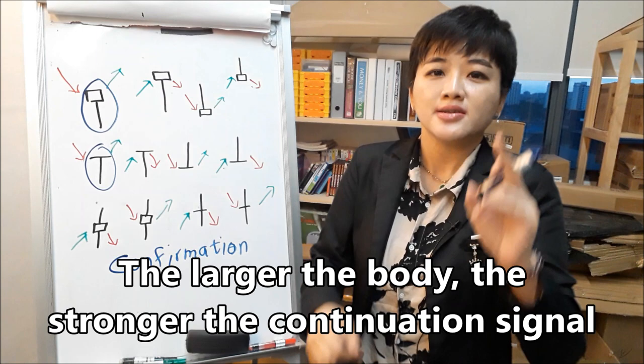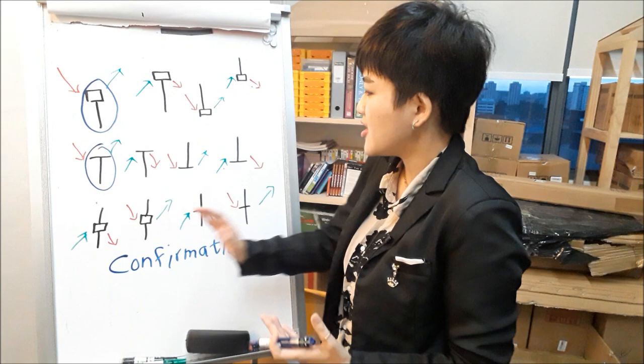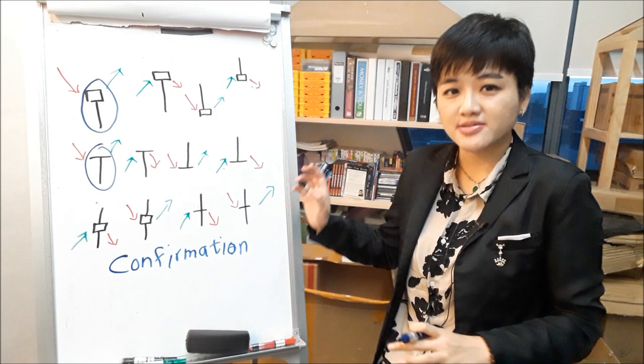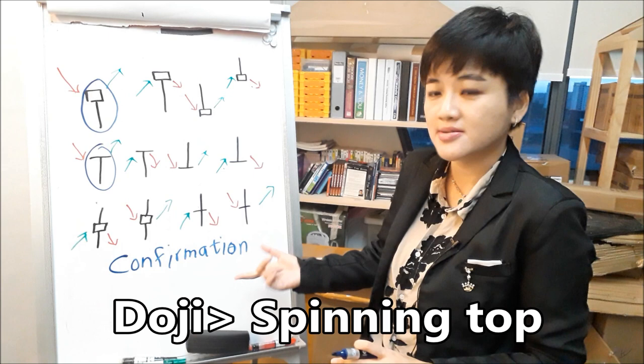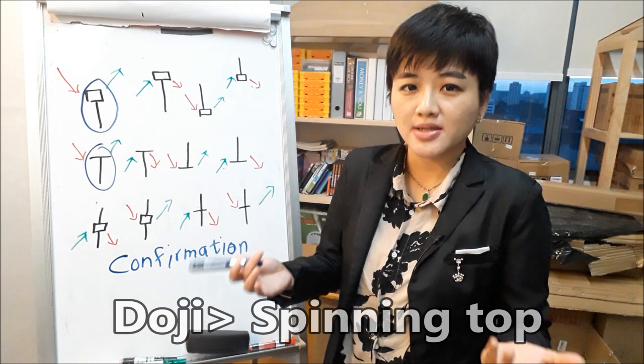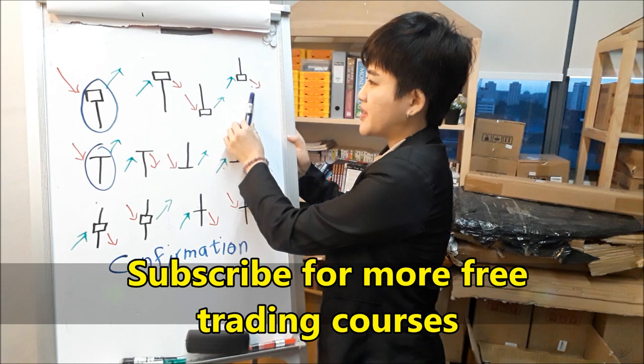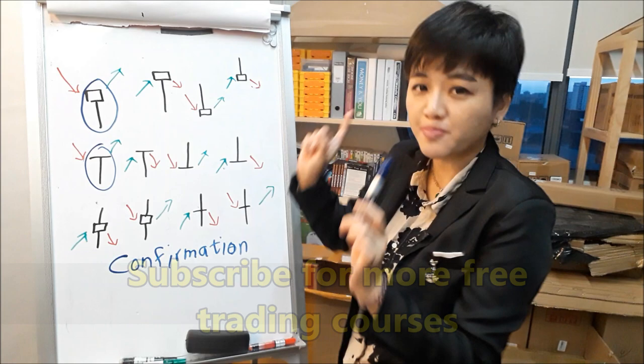So if you compare the reversal strength of this pattern and this pattern — which one is stronger? The answer will be this pattern. Because for a Doji, the open and close are the same. Hence, this is a stronger reversal pattern as compared to the spinning top. And in terms of bearish strength, it's almost the same thing. Which one has a stronger bearish strength? Even though both will cause the trend to U-turn and go downwards, the answer will be this one.